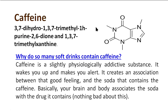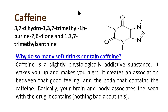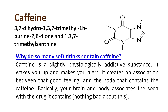Caffeine — here is the chemical structure of caffeine. Caffeine is chemically named as 3,7-dihydro-1,3,7-trimethyl-1H-purine-2,6-dione. It is also categorized as an alkaloid. Why do soda makers add caffeine into soft drinks? The reason is that caffeine is a slightly physiologically addictive substance. It wakes you up and makes you alert. It creates an association between the good feeling and the soda that contains caffeine. Basically, your brain and body associate the soda with the drug it contains — and here the drug is caffeine.